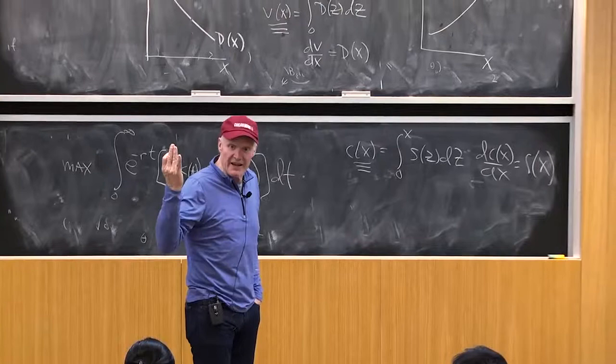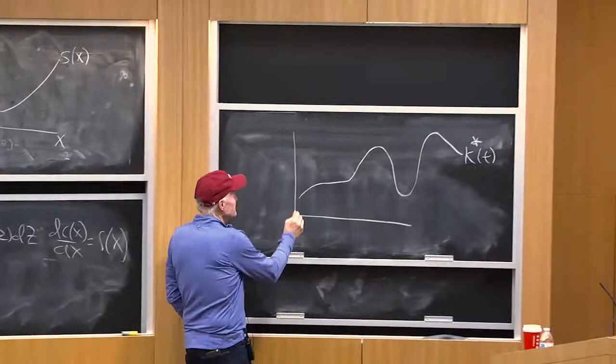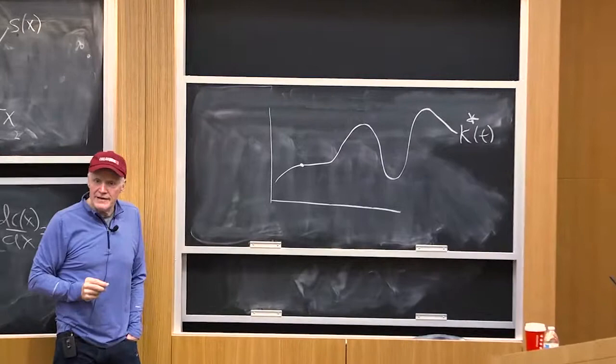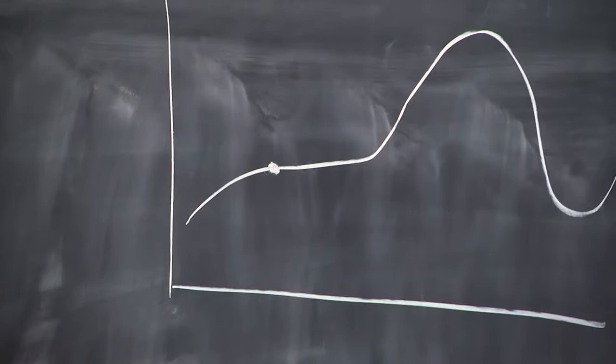I can't change k dot without changing k. So think about it. What if I was to raise k dot at one point in time? Just invest a little more at one date, holding k dot and all the future dates fixed. What would happen to my path? How would I perturb my path?